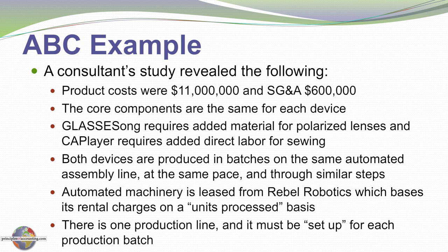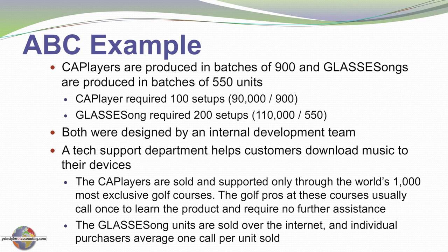Both devices are produced in batches on an automated assembly line at the same pace and through similar steps. Automated machinery is rented from Rebel Robotics on a per-unit charge. With each batch we must set up the production line. Cap Player can be produced in batches of 900, so producing 90,000 caps required 100 setups. Glasses Song can only run in batches of 550, so producing 110,000 pairs required 200 setups.